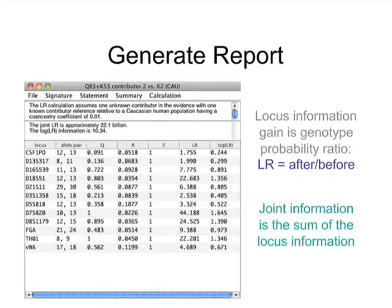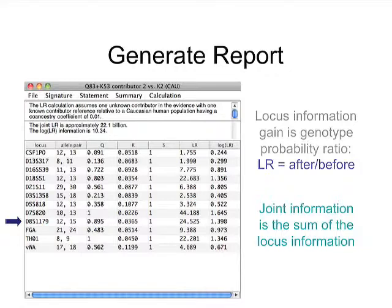This is what a report looks like generated from the system. We put in co-ancestry with a theta of 0.1. The likelihood ratio at each allele is the probability after divided by the probability before. We can see that with D8 — if you look at the row for D8, you'll see that allele pair 12, 15, which matches the suspect, before we looked at the data had a probability in the population of 3.6%. Afterwards, the probability is about 90%. 90% divided by 3.6% is a likelihood ratio of about 25. We take the log of it — it's 1.4 — add them all up, and now you have the joint information from the independent locus experiments, which is about 100 billion. This we showed at trial.